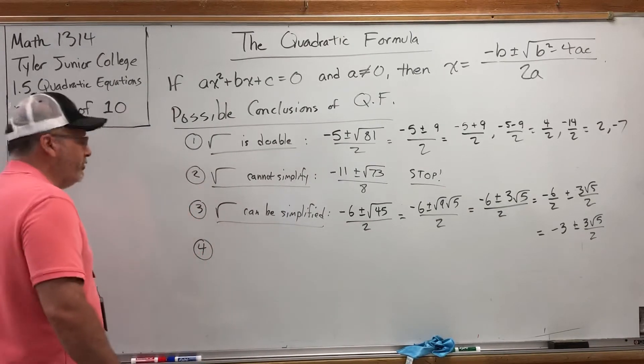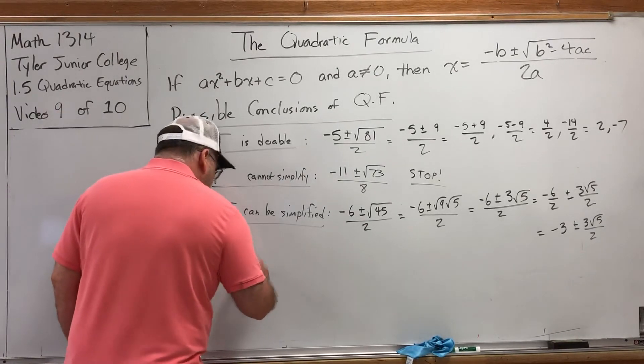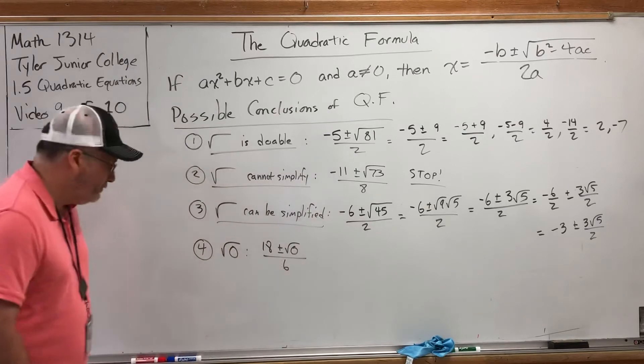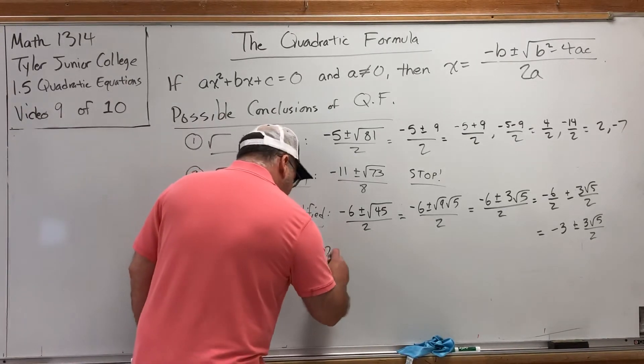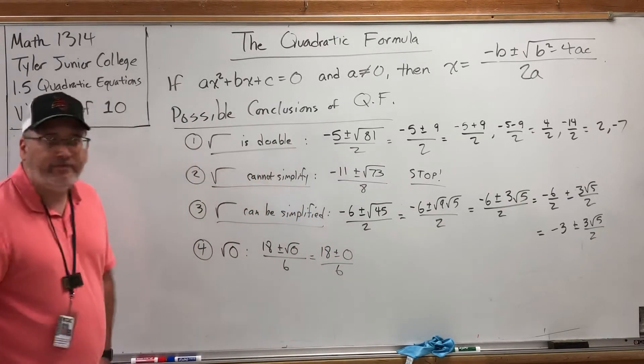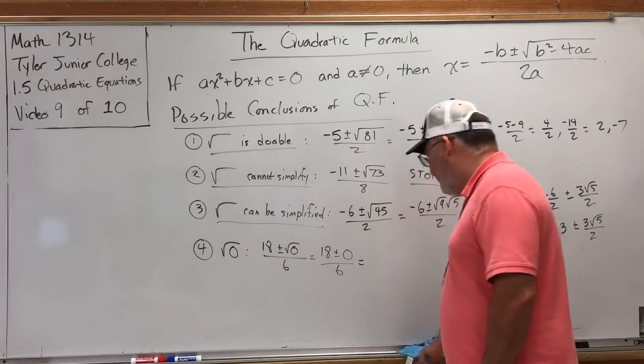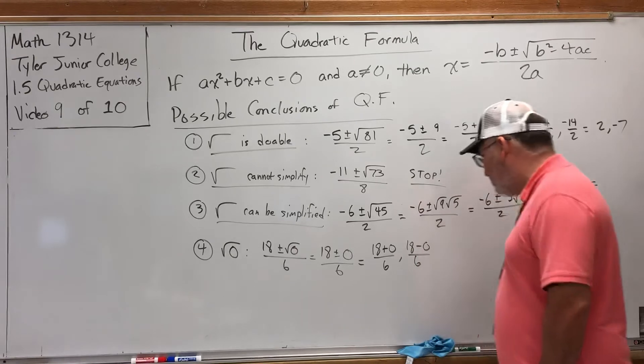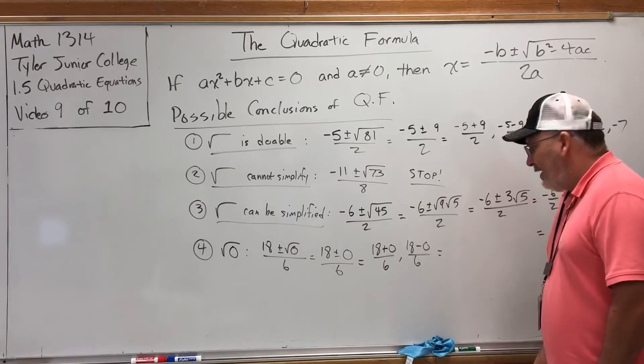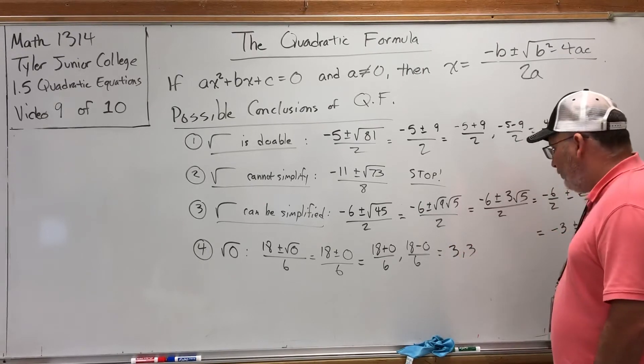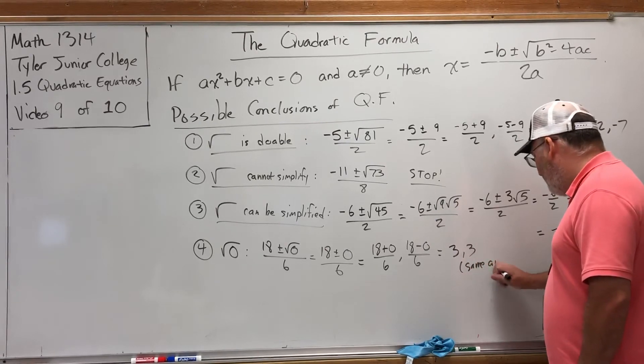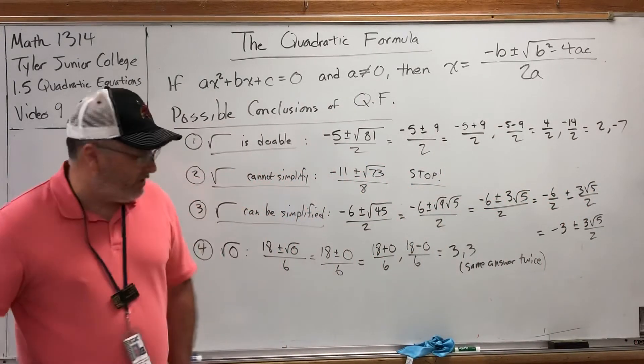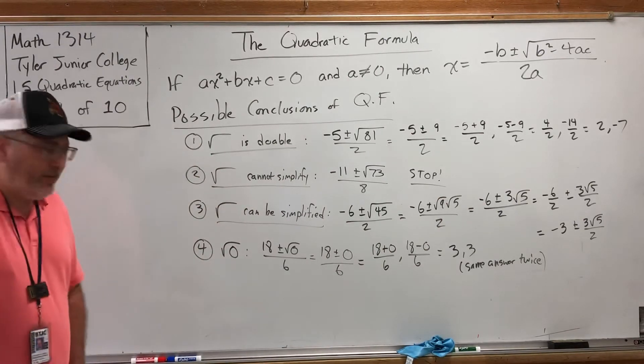The fourth possible conclusion is a very specific one when you get the square root of 0. So, for example, if we had something like 18 plus or minus the square root of 0 over 6, the square root of 0 is 0. Technically, this falls under the first category. I did the square root. But it has a particular outcome. Because I can do the square root, I can and should do both the addition and subtraction. So, 18 plus 0 over 6 and 18 minus 0 over 6. But both of these equal the same thing. 18 over 6. Both of which reduce to 3. So, the reason this gets its own dimension is because you get the same answer twice. If this were a question in an online homework platform, you would just enter the answer once. There's a consequence of the answer showing up twice. We'll discuss that when we get to chapter 3.